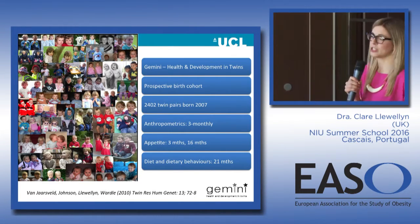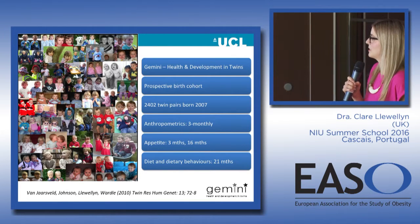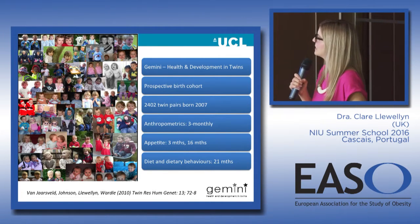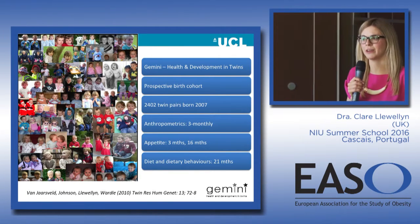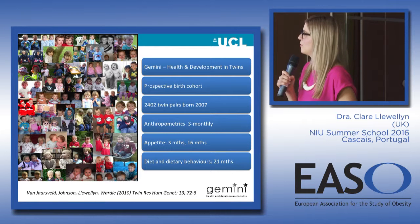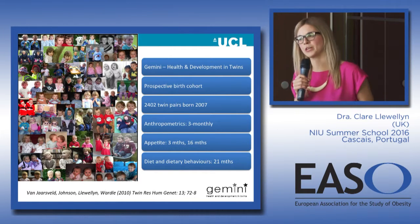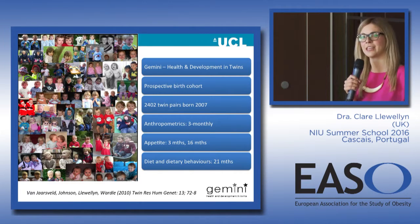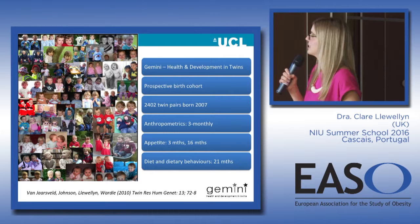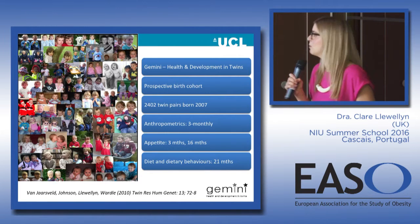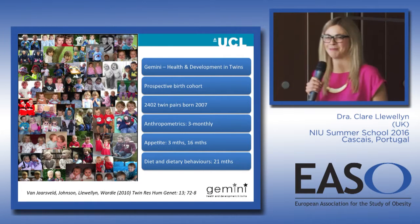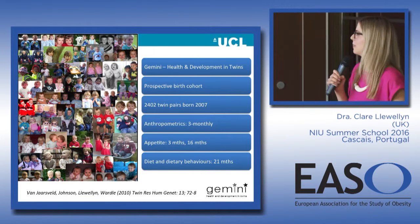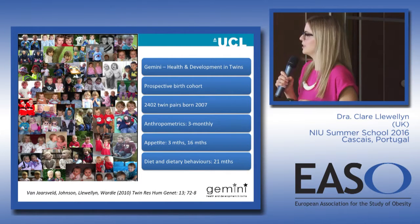Gemini includes 2,402 families who had twin births between March and December 2007. It's actually the largest twin study ever set up specifically to look at genetic and environmental contributions to early growth. We've been collecting weight data every three months — they're now eight turning nine — giving us incredibly detailed growth data. In the first year of life parents were asked to send in all growth measurements taken routinely by health professionals. We measured appetite at three months and again at 16 months, and at 21 months sent three-day diet diaries to all families.